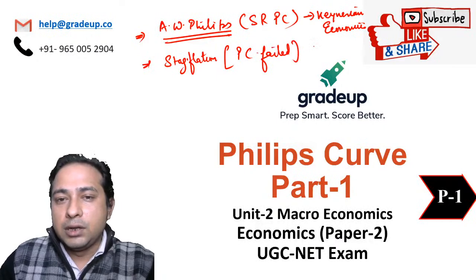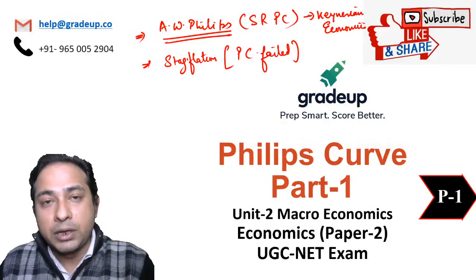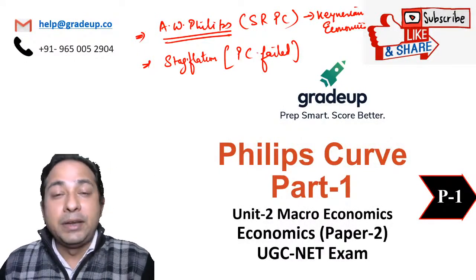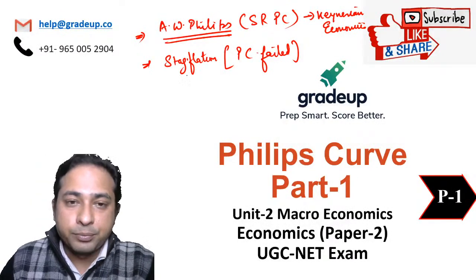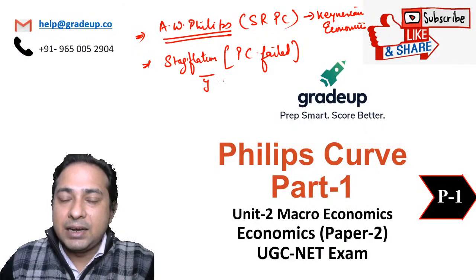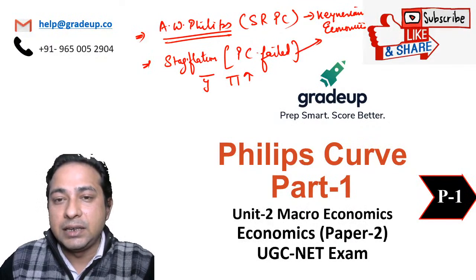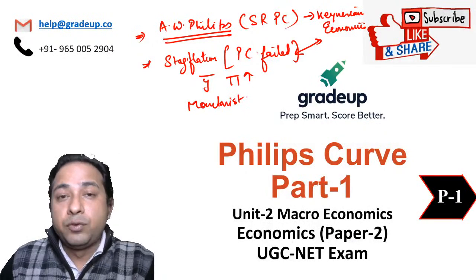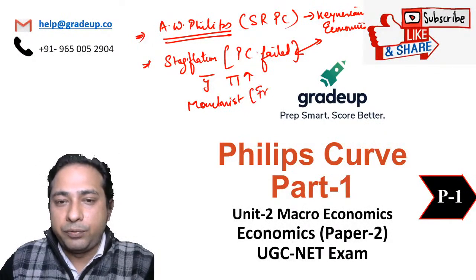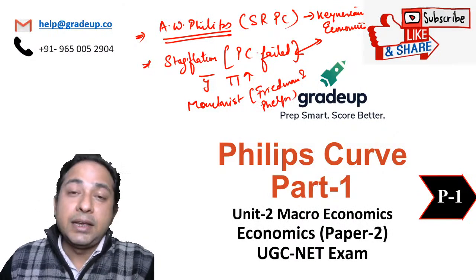The Phillips curve failed because stagflation occurred. As per Keynesian economics, if the government plays an active role, depression should not come. But at that time, inflation was there while output growth was stagnant — so the Phillips curve failed here, indicating that Keynesian economics was failing. Then the monetarists, Milton Friedman and Edward Phelps, entered the scenario.